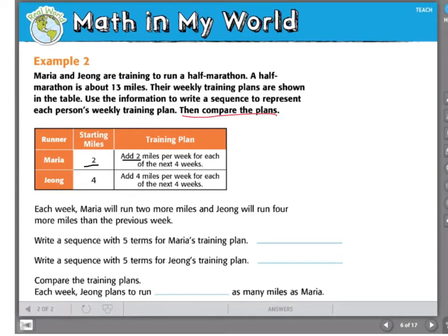Young will begin his training plan with four miles and add four miles per week for each of the next four weeks. Each week, Maria will run two more miles and Young will run four more miles than the previous week. Write a sequence with five terms for Maria's training plan.